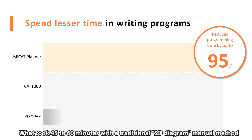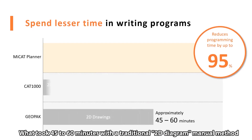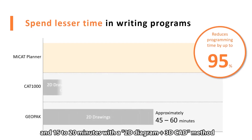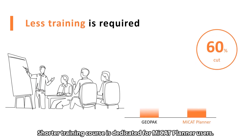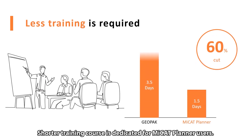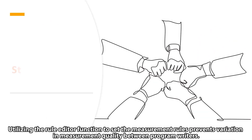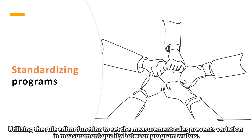What took 45 to 60 minutes with a traditional 2D diagram manual method, and 15 to 20 minutes with a 2D diagram plus 3D CAD method, can now be completed in approximately 3 minutes using MCET Planner. A shorter training course is dedicated for MCET Planner users, and utilizing the Rule Editor function to set measurement rules prevents variation in measurement quality between program writers.